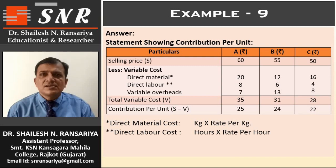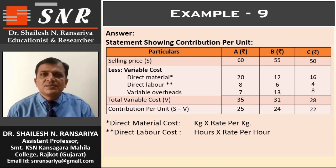Selling price: 60, 55, and 50. Less variable cost — direct material cost, calculated by multiplying kg and rate per kg, is 20, 12, and 16. Direct labor is 8, 6, and 4. Variable overheads are 7, 13, and 8. So total variable cost is 35, 31, and 28. Therefore, per unit contribution (S minus V) is 25, 24, and 22 for products A, B, and C respectively.